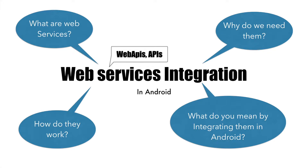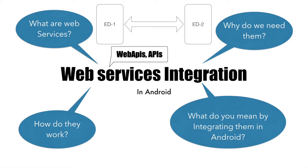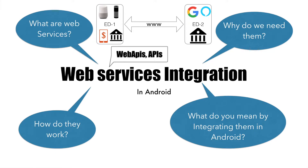To understand what web services are, let's assume that you have two electronic devices and they want to communicate with one another over the worldwide web. To do that, you basically use web services. Some examples could be using a Google Home to communicate with Google, or using Amazon Echo to communicate with Alexa, or it could be a bank and a mobile banking application which want to communicate with one another, or a bank with another bank to do any kind of banking transaction.